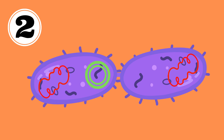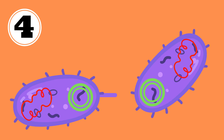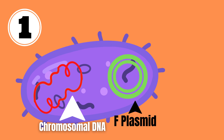This double-stranded plasmid becomes two single-stranded plasmids, and one of those is then transferred to the recipient cell. Finally, both cells synthesize a complementary strand to produce a double-stranded circular plasmid in both cells, and also reproduce pili. Both cells are now viable donors for this F-plasmid, or the F-factor as it is also called.